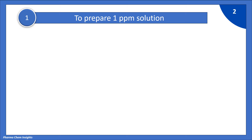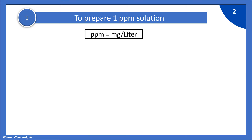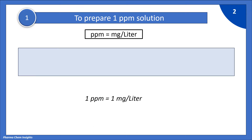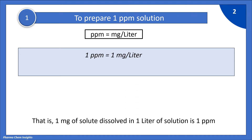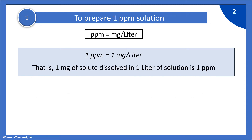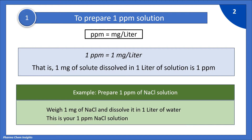To prepare a 1 ppm solution: ppm is equal to mg per litre. 1 ppm is equal to 1 mg per litre — that is, 1 mg of solute dissolved in 1 litre of solution is 1 ppm.